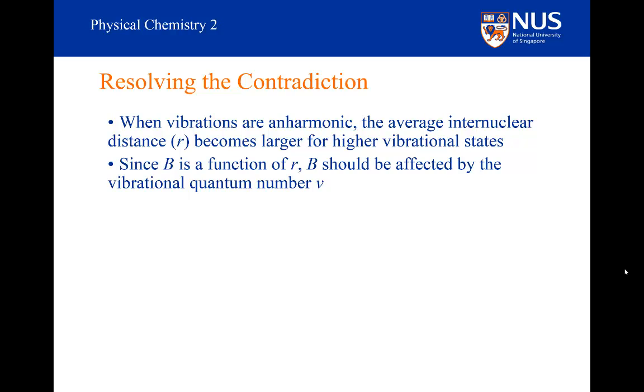So the rotational constant for a molecule in the v equals 1 state will be smaller than that for a molecule in the v equals 0 state. In the previous analysis, we assumed that it would always be the same. What happens if we don't make that assumption? And that is what we are going to do now. We know that the rotational constant should be affected by the vibrational quantum state.